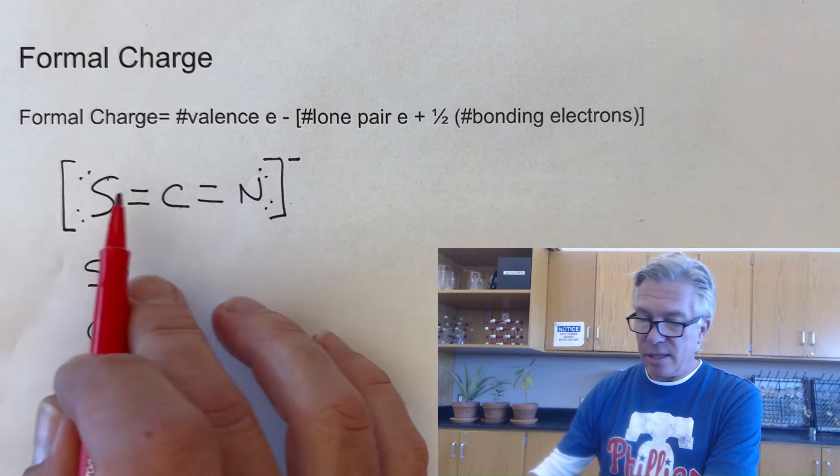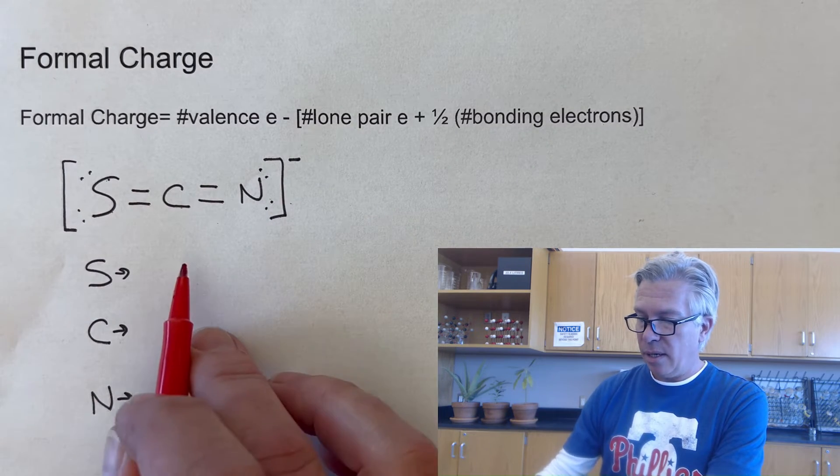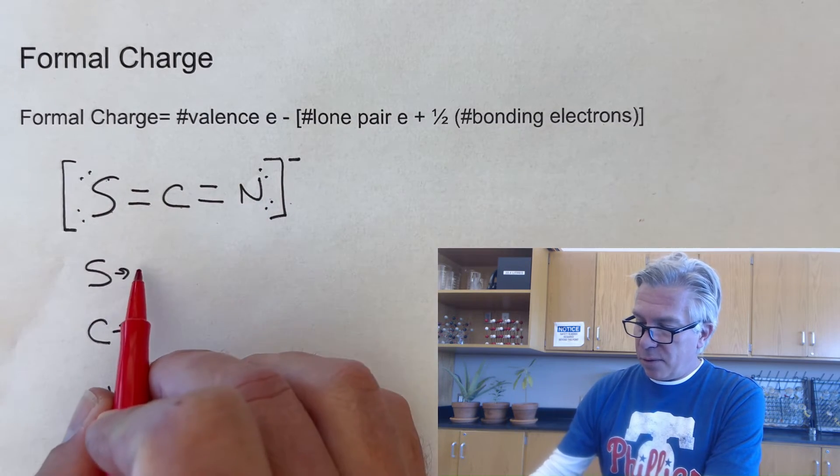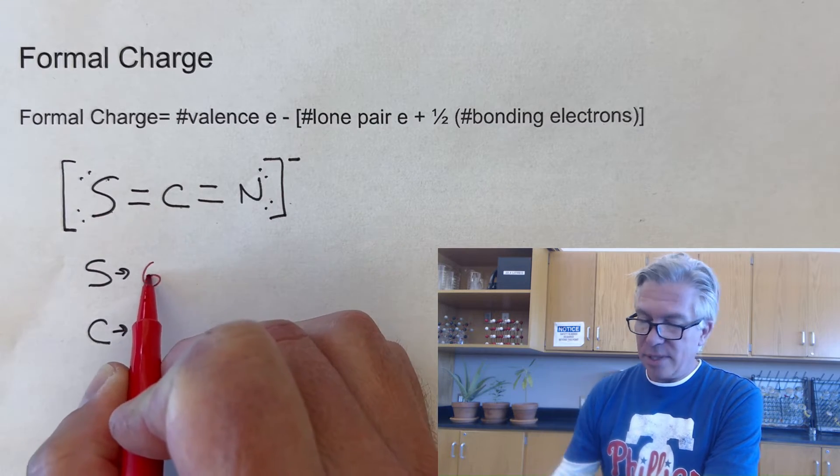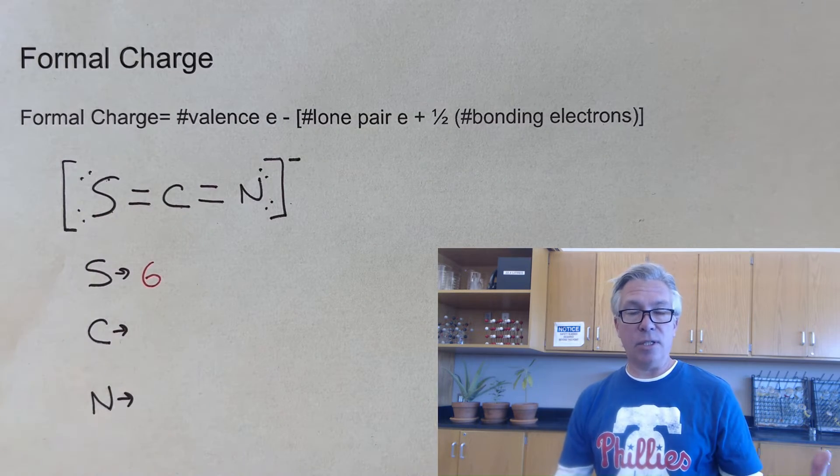So the formal charge, I'm just picking the first resonance structure that we did. And for sulfur, for example, sulfur, according to the periodic table, will start with six valence electrons. That's what it starts with.